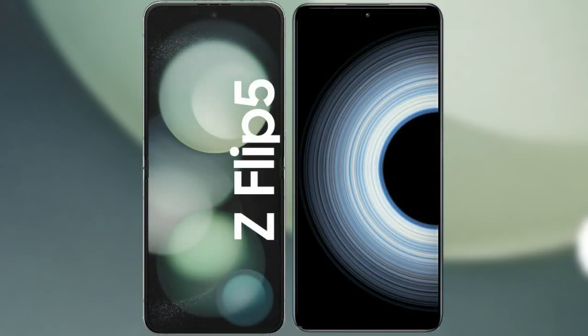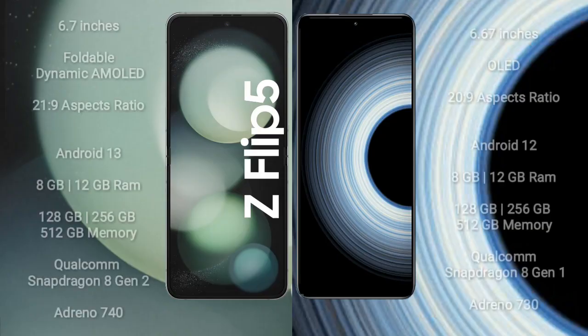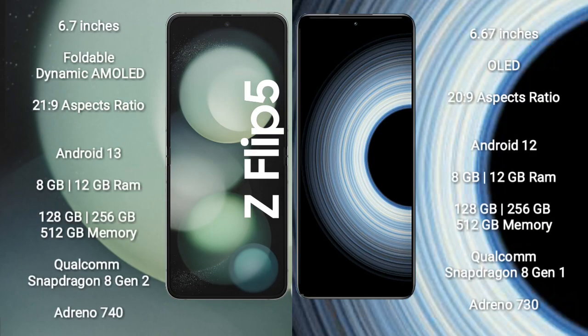I will compare the new Samsung Galaxy Z Flip 5 with Redmi K50 Ultra. Samsung Galaxy Z Flip 5 comes with a 6.7 inches foldable dynamic AMOLED display and aspect ratio 21:9. Redmi K50 Ultra comes with a 6.67 inches OLED display and aspect ratio 20:9.